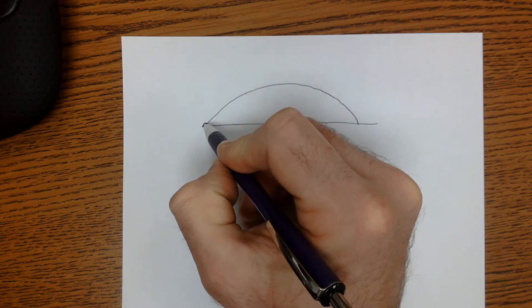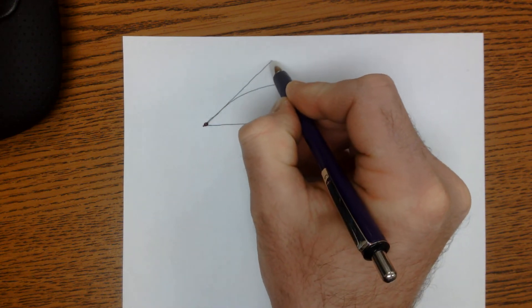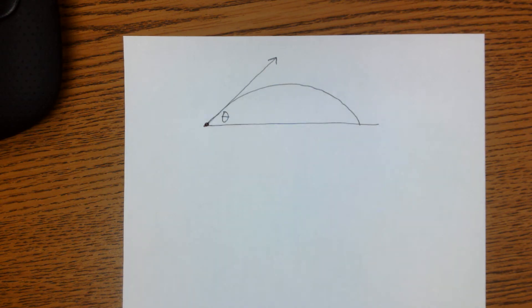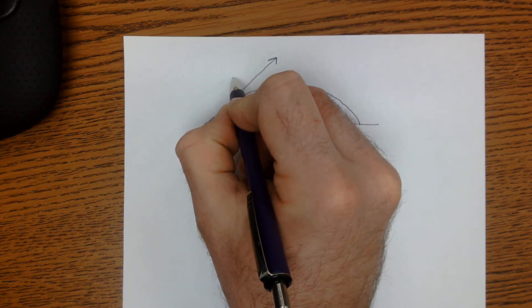When it takes off at launch, it's taking off at one specific angle theta, and it's got some velocity v.